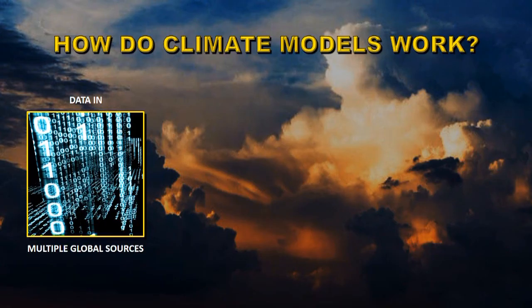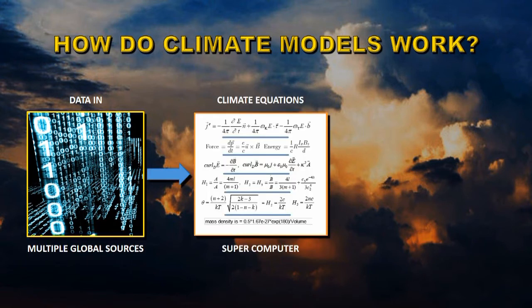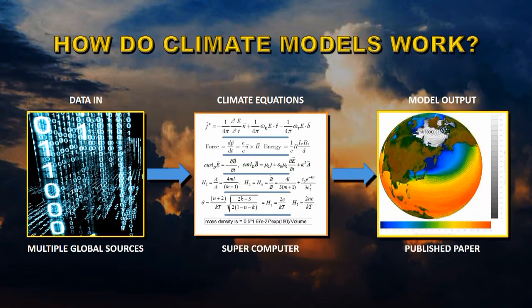Perhaps it's important to understand how climate models work and what they can do, and perhaps just as importantly what they can't do. Climate models start with data, gathered from multiple global sources. Those are fed into a supercomputer through various climate equations that represent the different processes associated with climate. The output of that process is a climate model, which is then published in a peer-reviewed scientific journal.